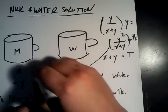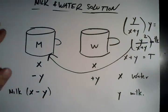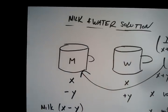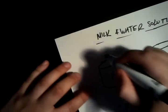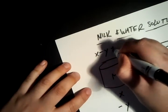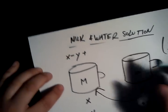And then we take that and we put it back inside here. So then the total amount of milk in here is going to be x minus y plus y squared over x plus y.